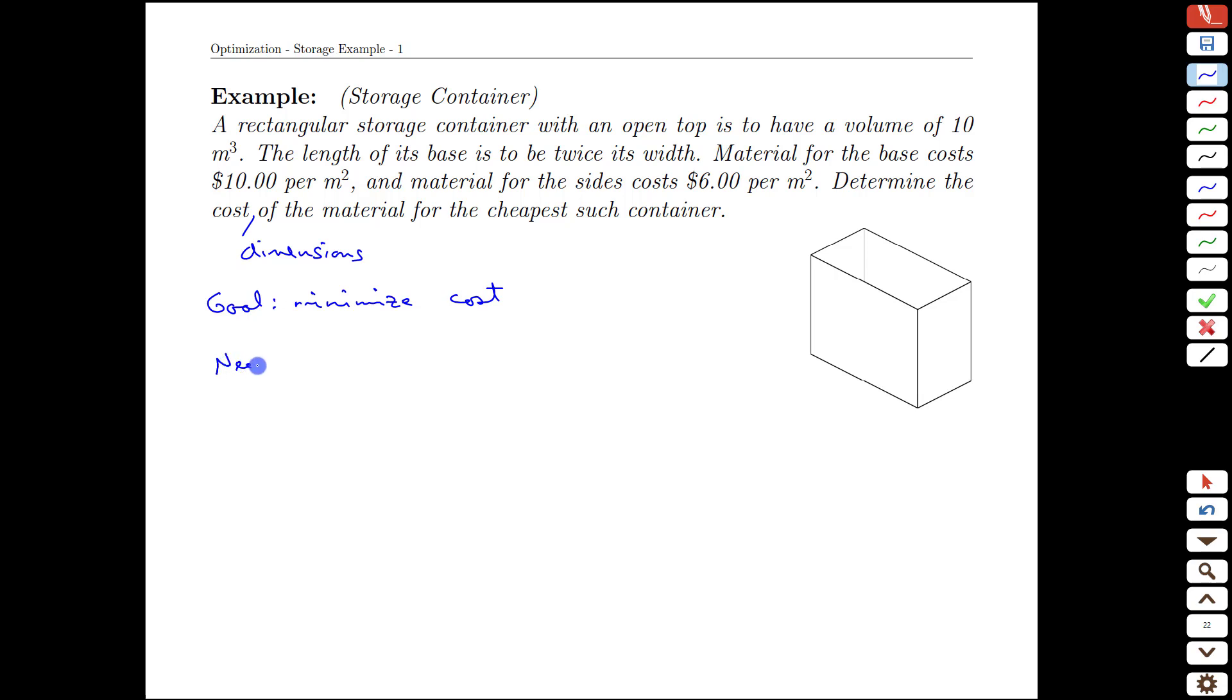And that means we need a function that is cost equals some function of the variables involved. We don't have any defined for us, so it makes sense to put some in ourselves. One natural set of variables would be to use, say, the short width here is w and the height is h.